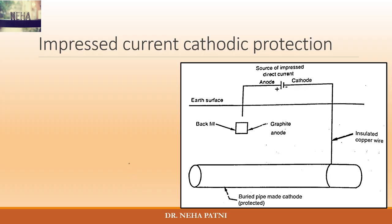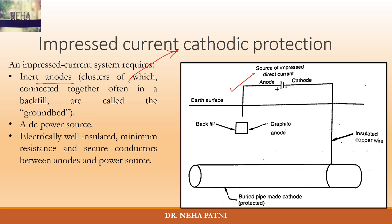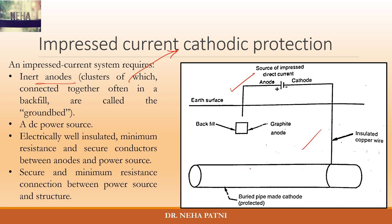The second method is impressed current cathodic protection. The principle remains the same — you have to make your anode become cathode. What you need in this system is one inert anode, which is connected in the form of a backfill, a DC power source, electrically well-insulated secure conductors between the anode and power source, and a secure minimum-resistance connection between the power source and the structure.